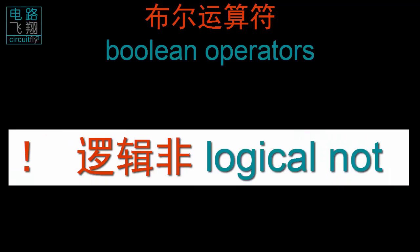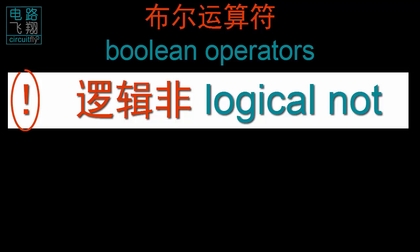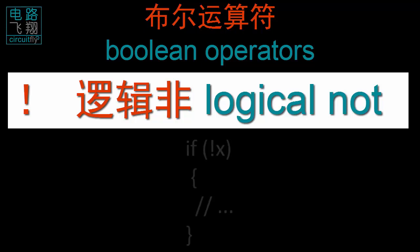逻辑非，NOT. 一个感叹号(!)是逻辑非的运算符。它对操作数进行逻辑非的运算，当操作数为假值时，条件为真值。举例来说，如果x为假值，通过逻辑非运算后，if条件为真值。For example, if not x is true if x is false — that is, if x equals 0.